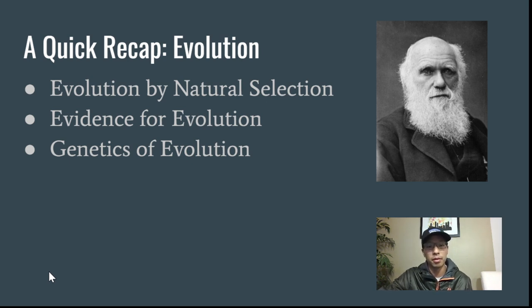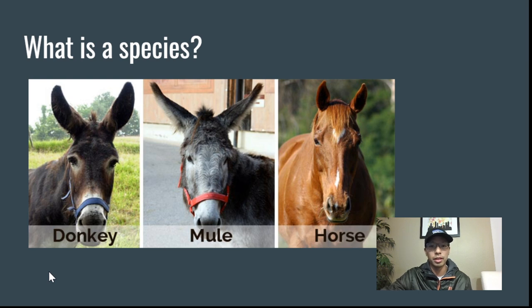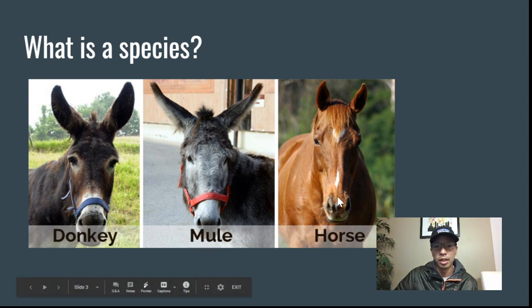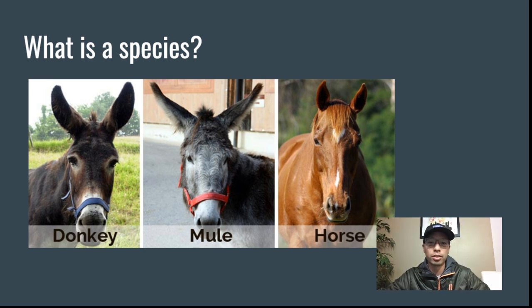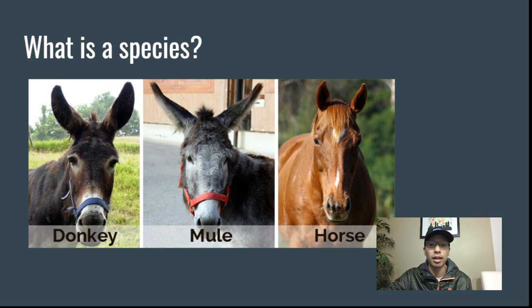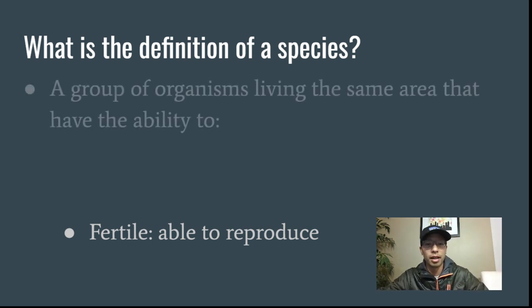The next topic in this sequence is speciation. Before we can talk about how that works, we have to come back to the word 'species' found within 'speciation.' The first question is: what is a species? Here you see three animals that are pretty similar — a donkey on the left, a mule in the middle, and a horse. You'd probably think they're related, and you'd be right. But the question is: are they the same species? This isn't a gut-feeling decision — we have criteria for that.